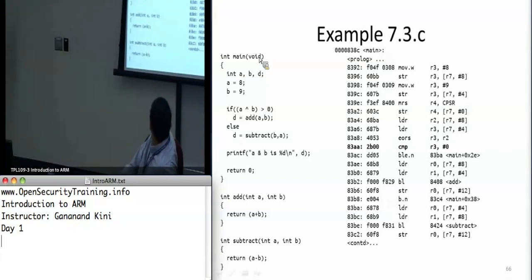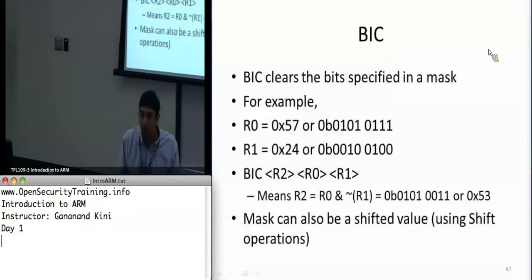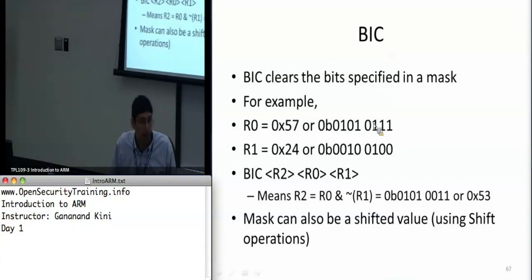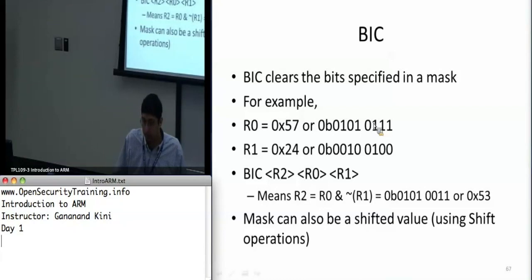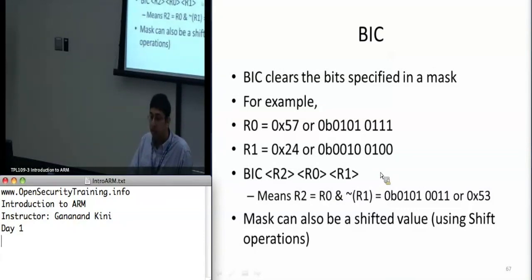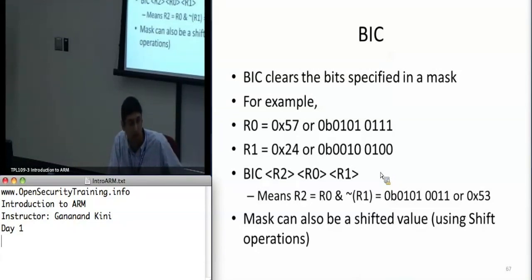BIC (bitwise clear) takes the bits set to one in the mask and clears them in the destination. Essentially it takes the ones complement of one operand and ANDs it with the second operand register. The mask can also be a shifted value using the inline barrel shifter. BIC is especially useful in ARM because a lot of ARM uses memory-mapped IO, where you need to set or clear interrupt enable bits — bitwise clear is very handy for this.